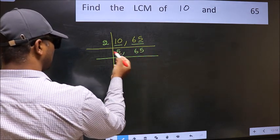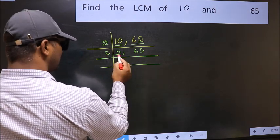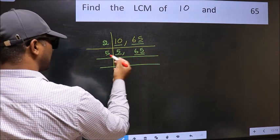Now here we have 5. 5 is a prime number. So 5 once 5. The other number 65, last digit 5. So this is divisible by 5.